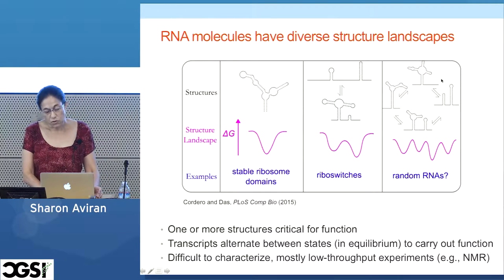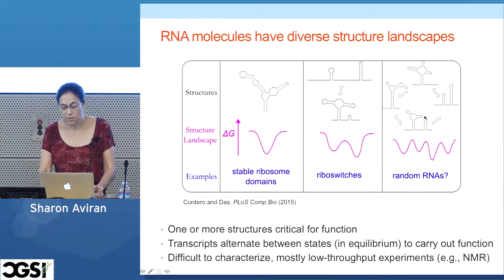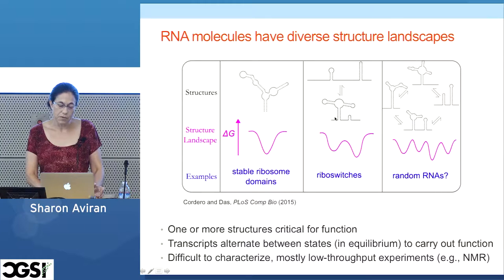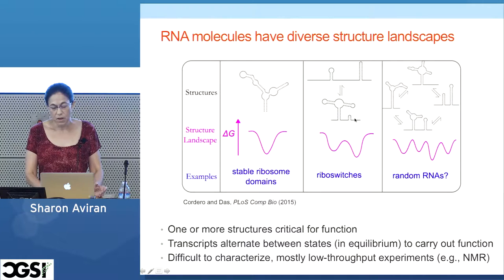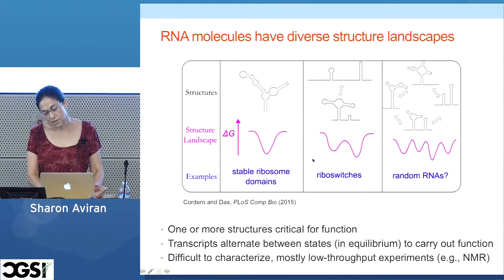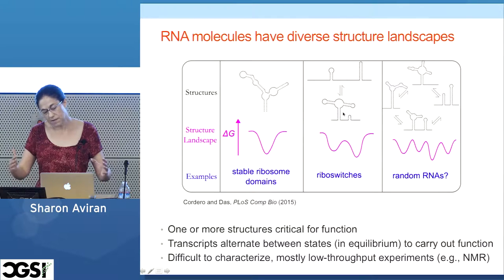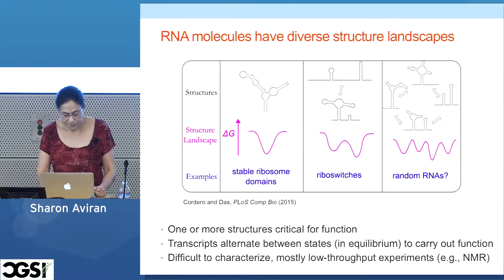A third type of landscape is where the RNA is all over the place, switching between many different conformations. People tend to think that coding regions of RNA have this type of landscape, but we don't know for sure, and we don't know if this is because you don't really need to be in a certain conformation or if it serves functionality. Currently, many people are trying to tackle the problem of characterizing landscapes that have several few functional structures.